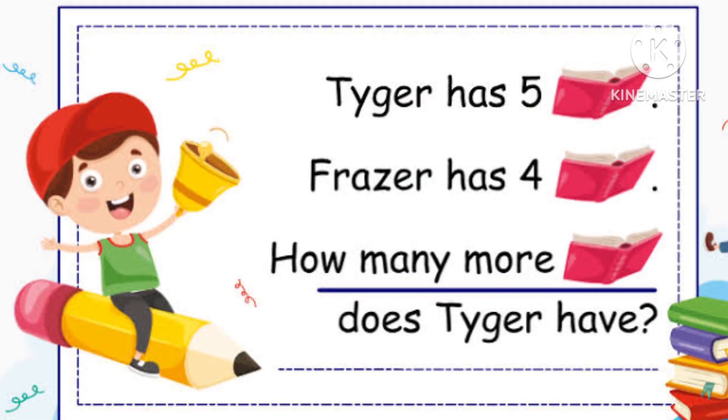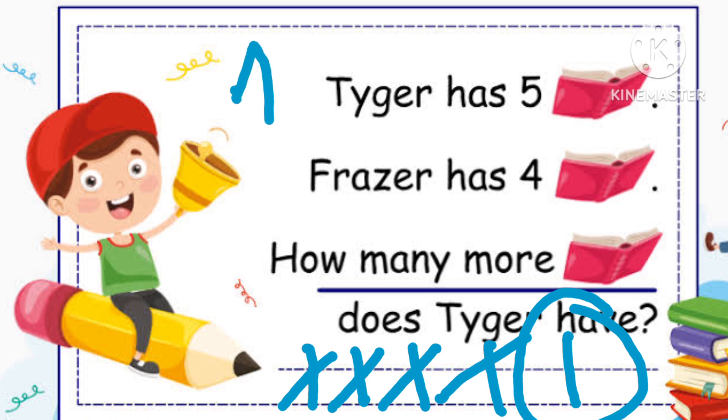Tiger has 5 books, Fraser has 4 books. How many more books does Tiger have? Let's draw 5 lines, and then cut 4 lines. So how many lines left? 1. So Tiger has 1 more book.